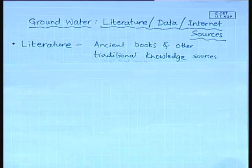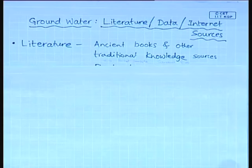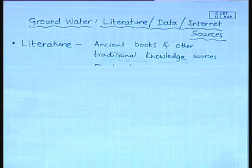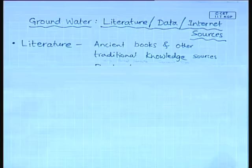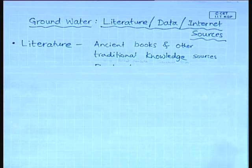I would like to start with the oldest ones chronologically: the ancient books and other traditional knowledge sources. These are essentially from all regions where human civilization started — the river valley civilizations, whether it is the Indus river valley civilization in present day India and Pakistan, the Mesopotamian river valley civilization in Iraq, or the Nile river valley civilization in Egypt. Wherever river valley civilization started, documentation of ground water-related phenomena and structures also began.